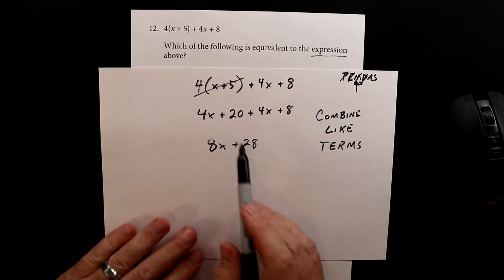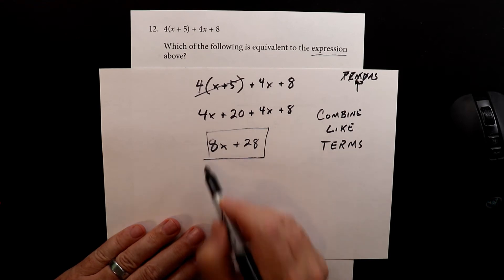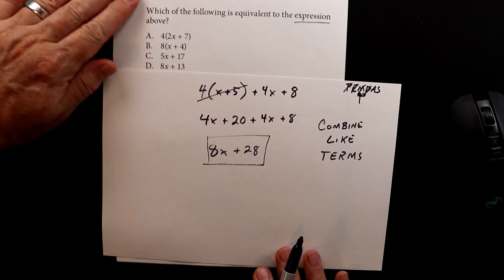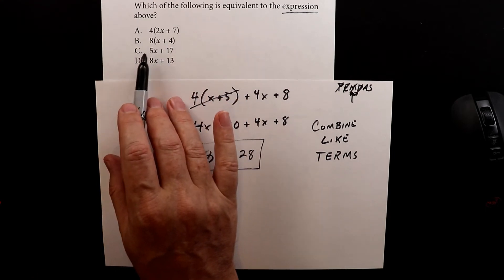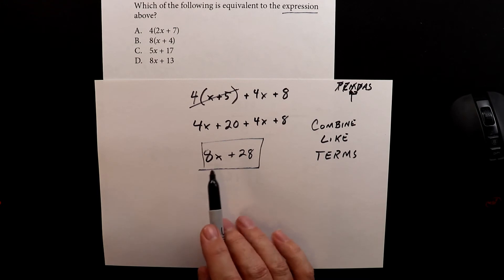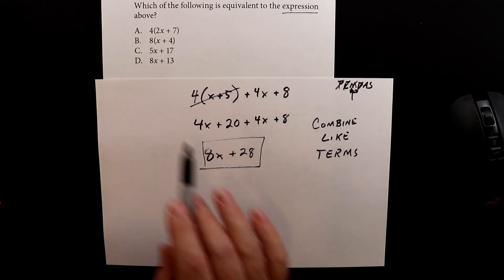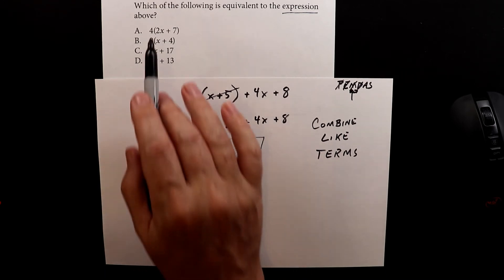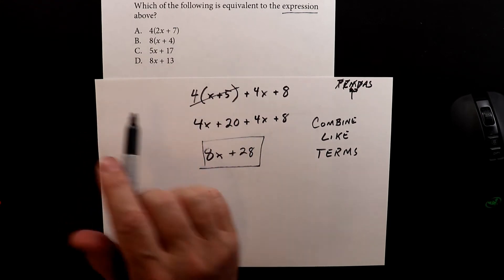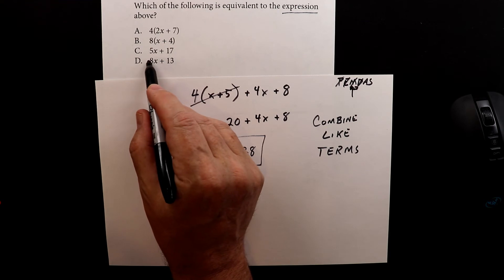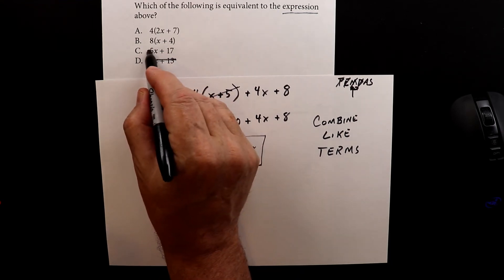And that's it — all of this gets turned into 8x plus 28. So we check to make sure our answer is there among the choices. None of the first options match directly. 8x plus 13 is definitely not it, so that gets crossed off. 5x plus 17 doesn't work either. That leaves us with two remaining choices.